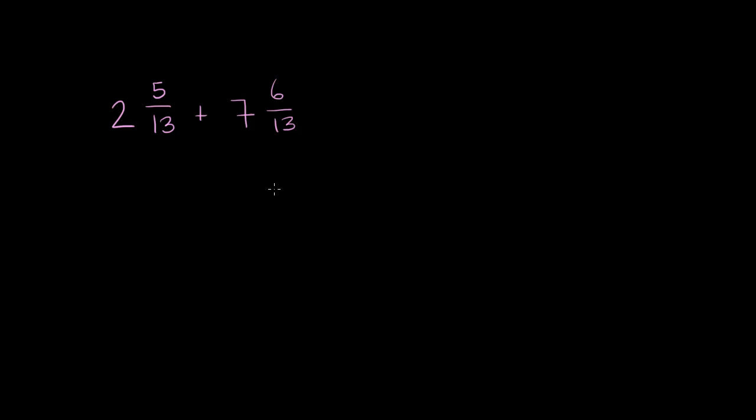And the way I like to think about it in my head, I like to separate out the mixed numbers into the whole number component and the fractional component. So we can rewrite 2 and 5 thirteens as 2 plus 5 over 13.